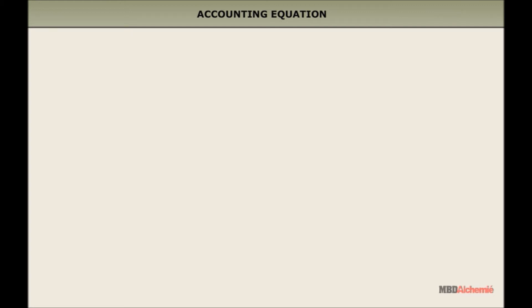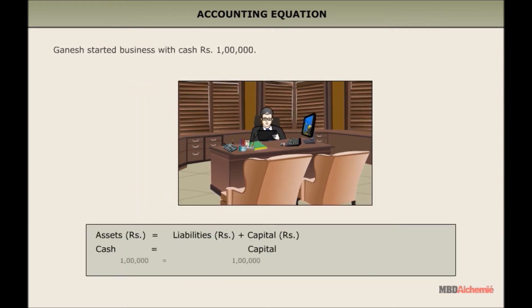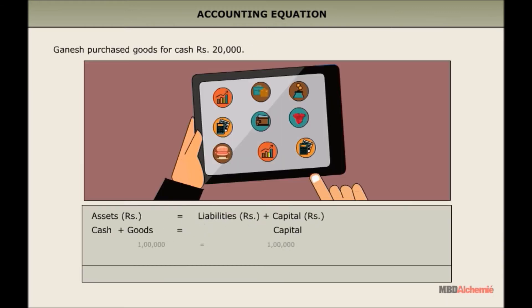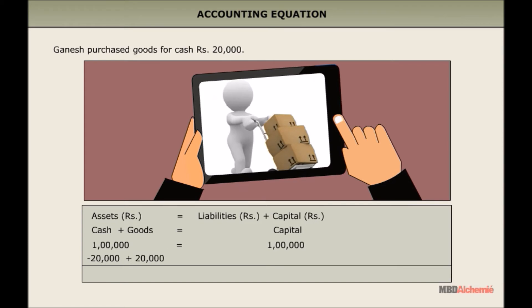Now let us understand these rules with the help of some transactions. Transaction 1: Ganesh started business with cash 1 lakh rupees. This transaction increased cash in assets by 1 lakh rupees and capital by the same amount, making the total of both sides equal. Transaction 2: Ganesh purchased goods for cash 20,000 rupees. This added goods worth 20,000 rupees on the asset side and decreased cash by the same amount.